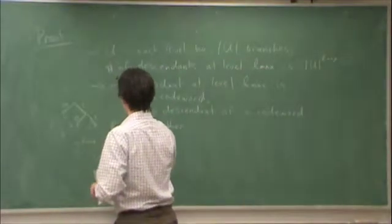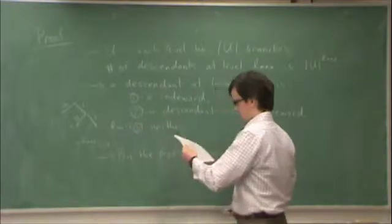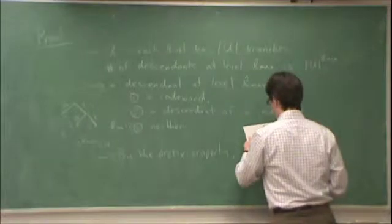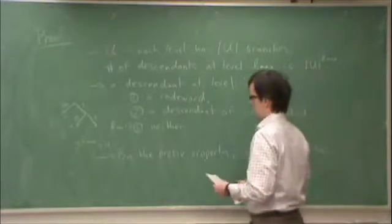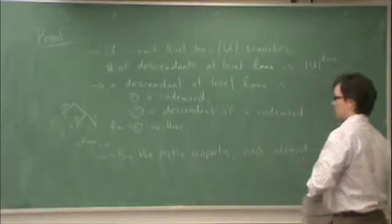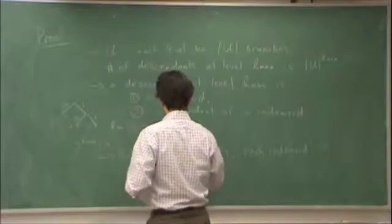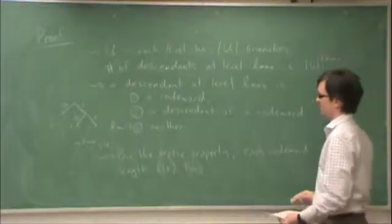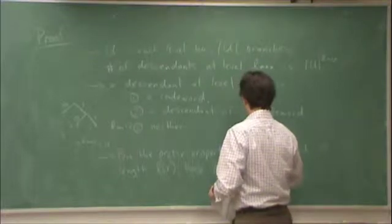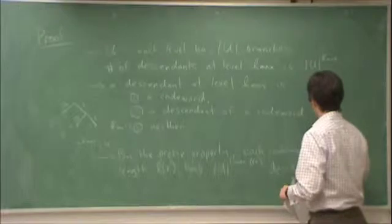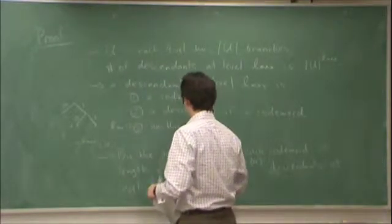So, by the prefix property, each codeword of length Lx has how many descendants at the bottom level? It has the cardinality of U to the power of Lmax minus L of x descendants at level Lmax, and the descendant sets are disjoint.